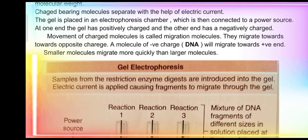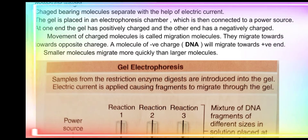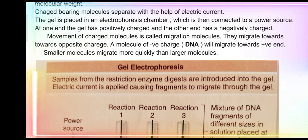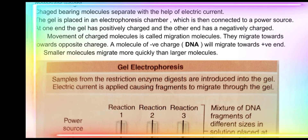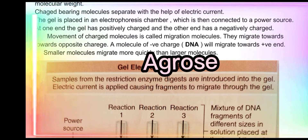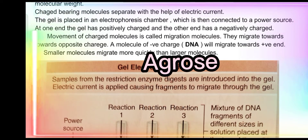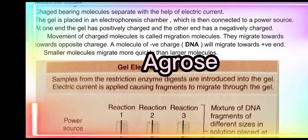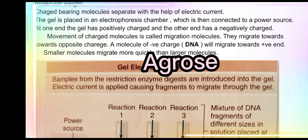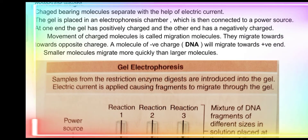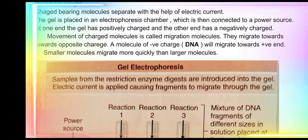ہمارے پاس ایک device ہے جسے ہم electrophoresis chamber کہیں گے۔ اس میں ہم agarose gel رکھیں گے۔ Agarose actually ایک sugar ہے جو ہمیں algae سے ملتی ہے۔